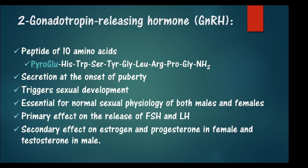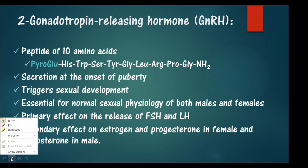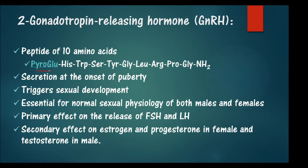The second hormone is the gonadotropin releasing hormone, also called GnRH, and it is a peptide of 10 amino acids. You can see the different amino acids here. The glutamate is a modified form called pyroglutamate, and the hormone is secreted at the onset of puberty.